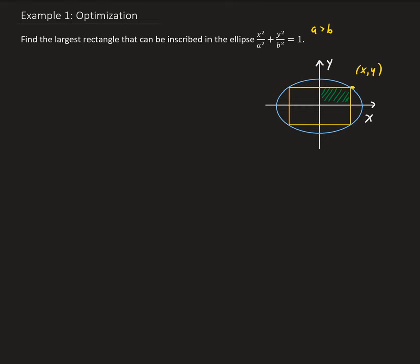The constraint for this problem is that the corners of this rectangle are touching the ellipse. This point up here in the first quadrant is touching the ellipse — we'll say this is an (x, y) value. What we want to do is find the largest rectangle, so we need to calculate the area. The area of that portion is going to be x times y — that's the green shaded area.